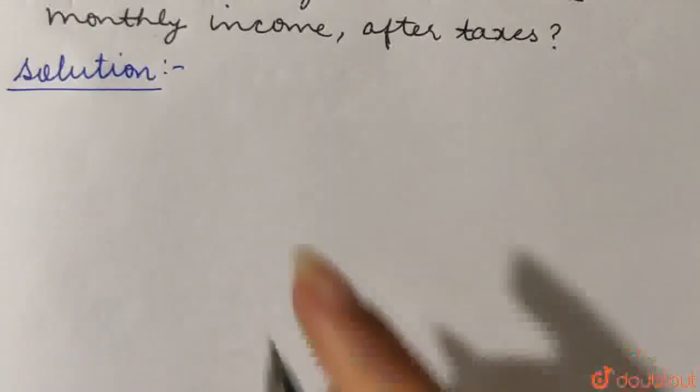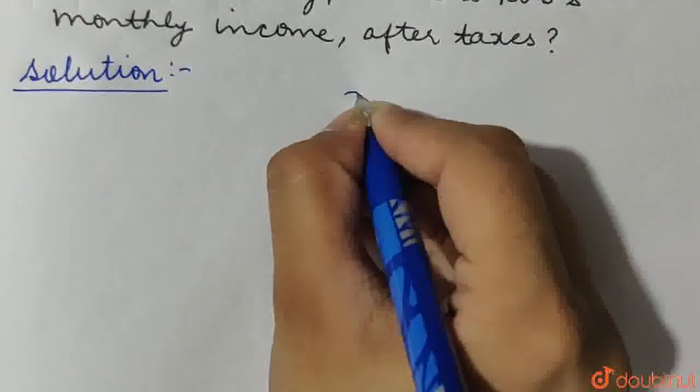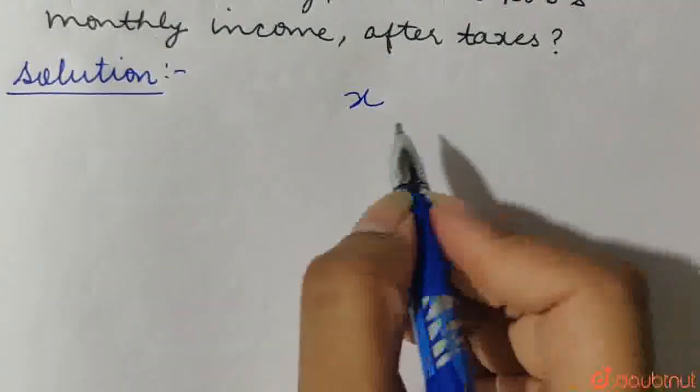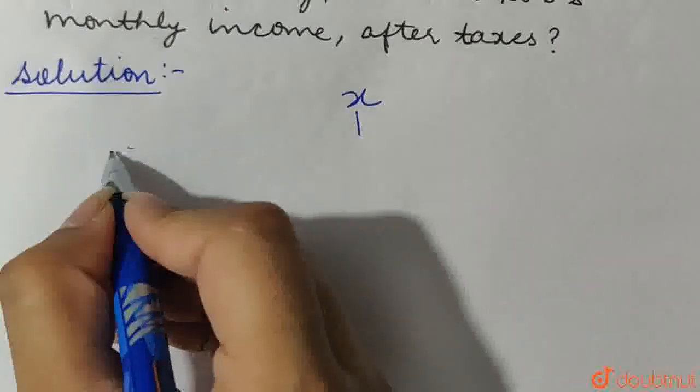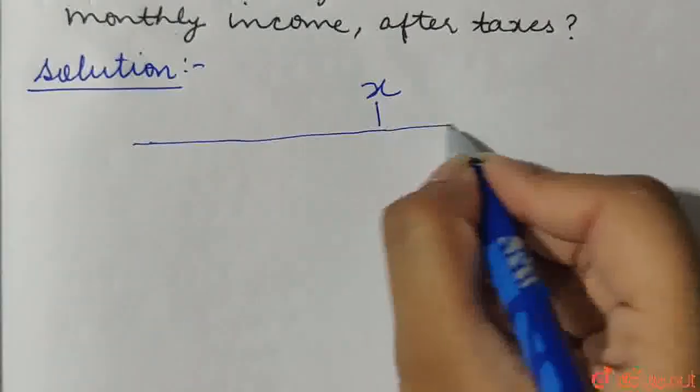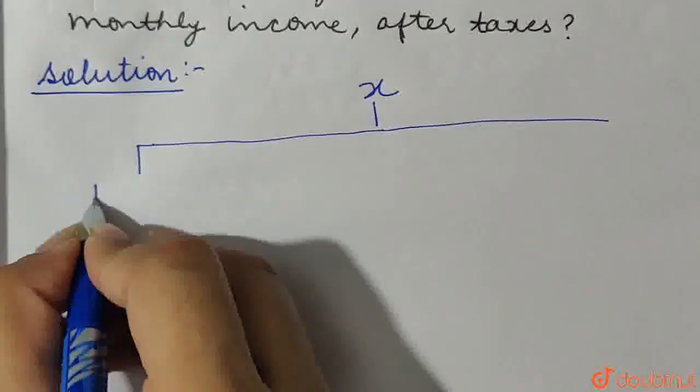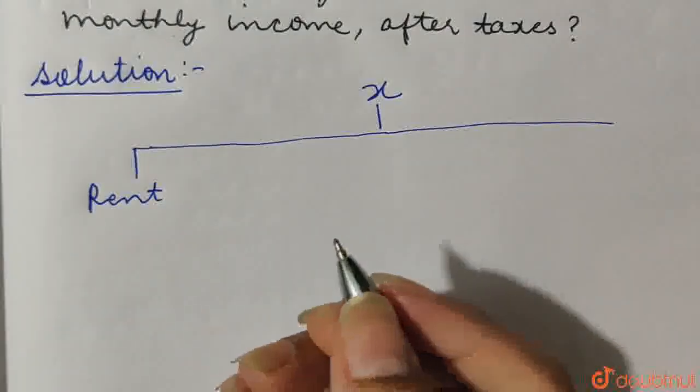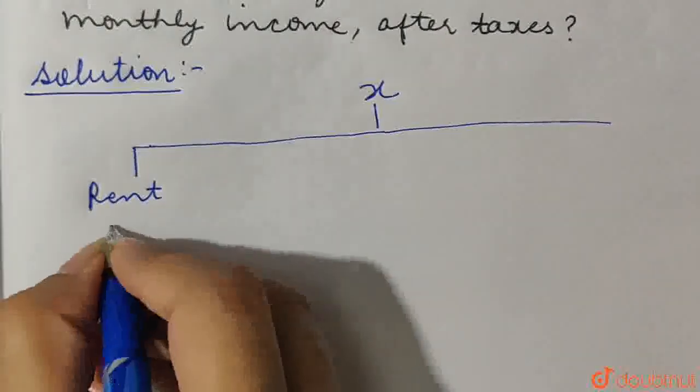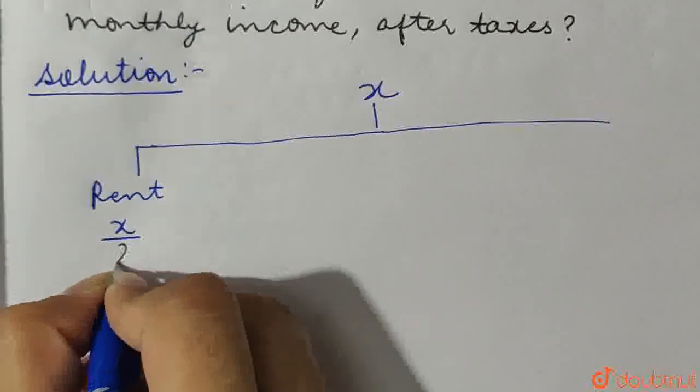So let us assume that Rob has a monthly income of X. His monthly income gets spent on various things. For example, rent. He spends half of his monthly paycheck on rent. That means X by 2 on rent.